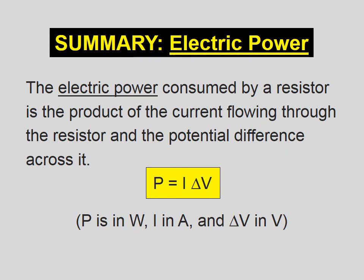Let's summarize electric power. The electric power consumed by a resistor is the product of the current flowing through the resistor and the potential difference across it. According to this equation, where power is in watts, current is in amps, and the pressure difference is in volts.